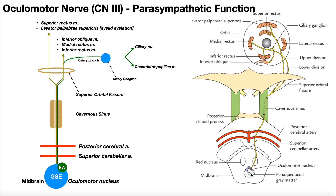There are two components to the oculomotor nucleus. We have the general somatic component right here, which was covered in the previous video, and this other part — EW — which is the Edinger-Westphal nucleus. This is the component that is parasympathetic, and we've got it color-coded here in green.